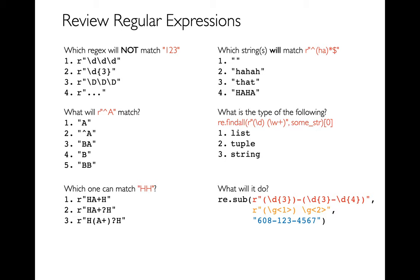This time I want to do some practices related to regular expressions and also some more complicated programming examples. So we'll just go through these, starting in the top left. Which of these regular expressions will not match the string 1, 2, 3? \d means a digit, so digit, digit, digit will absolutely match. When you put curly braces with a number inside, it means the thing in front repeats that many times, so both of these are matching just fine.